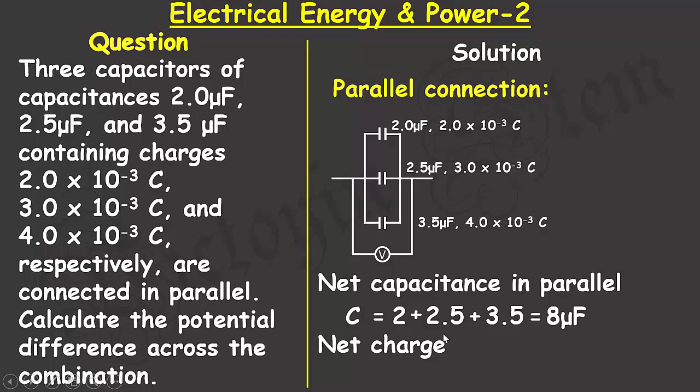Now, the net charges of the three capacitors that have been connected in parallel can also be calculated by summing up the values of the charges. The first one is 2, and then the next is 3,